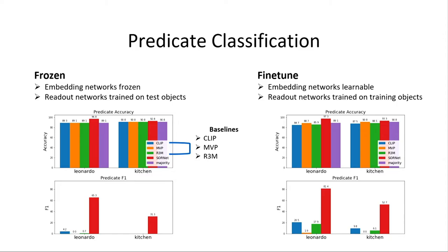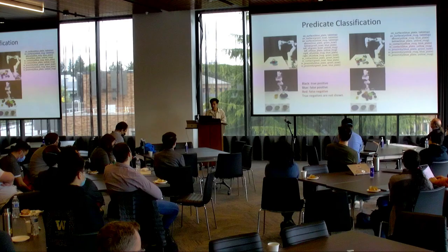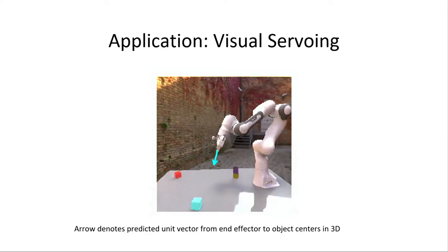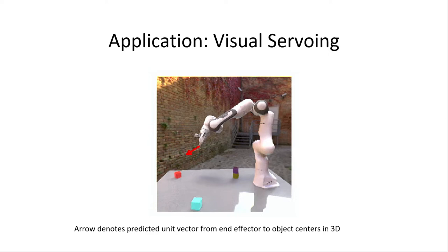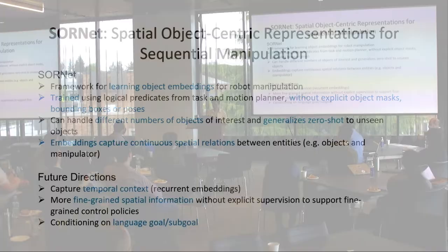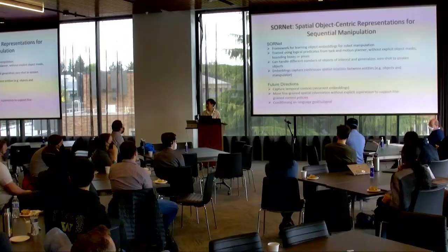We also have real-world results in our lab setting with objects grabbed from the kitchen, and the model can correctly predict predicates even with many distractor objects. Additionally, SorNet can predict continuous vectors from the end-effector to objects, potentially enabling visual servoing to directly control a robot to reach an object. Let's thank the speaker. The next speaker is Alan Fern from Oregon State University.